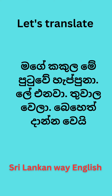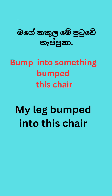This is the verb that we can use. The word is 'bump.' So, it is a bump. This is a branch of branch, which is a branch of branch. This chair is called this chair, and my leg bumped into this chair.